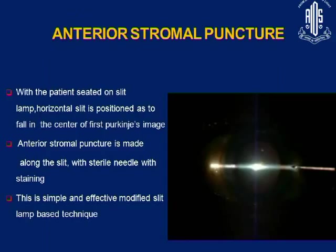This technique uses anterior stromal marking using the first Purkinje image on the slit lamp. The patient is seated at the slit lamp and the horizontal slit is positioned to fall on the center of the first Purkinje image. An anterior stromal puncture is made along the slit with a sterile 26-gauge needle. This technique was started by Dr. Manas at Aravind Eye Hospital, Pondicherry, and has been adopted with good results.